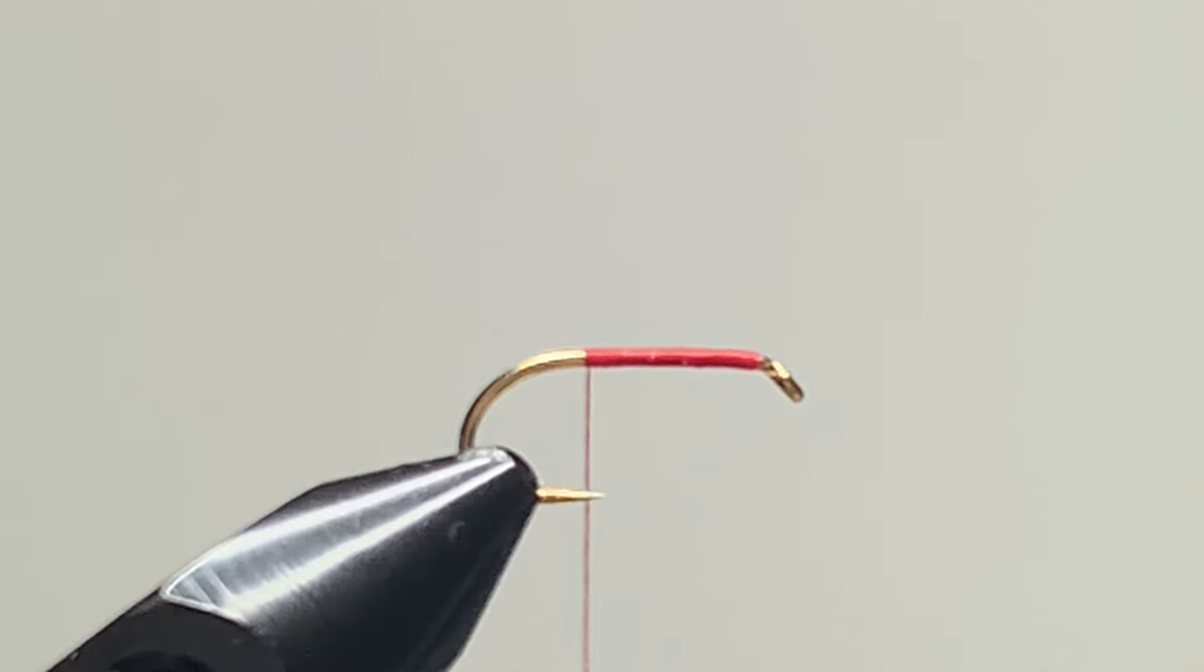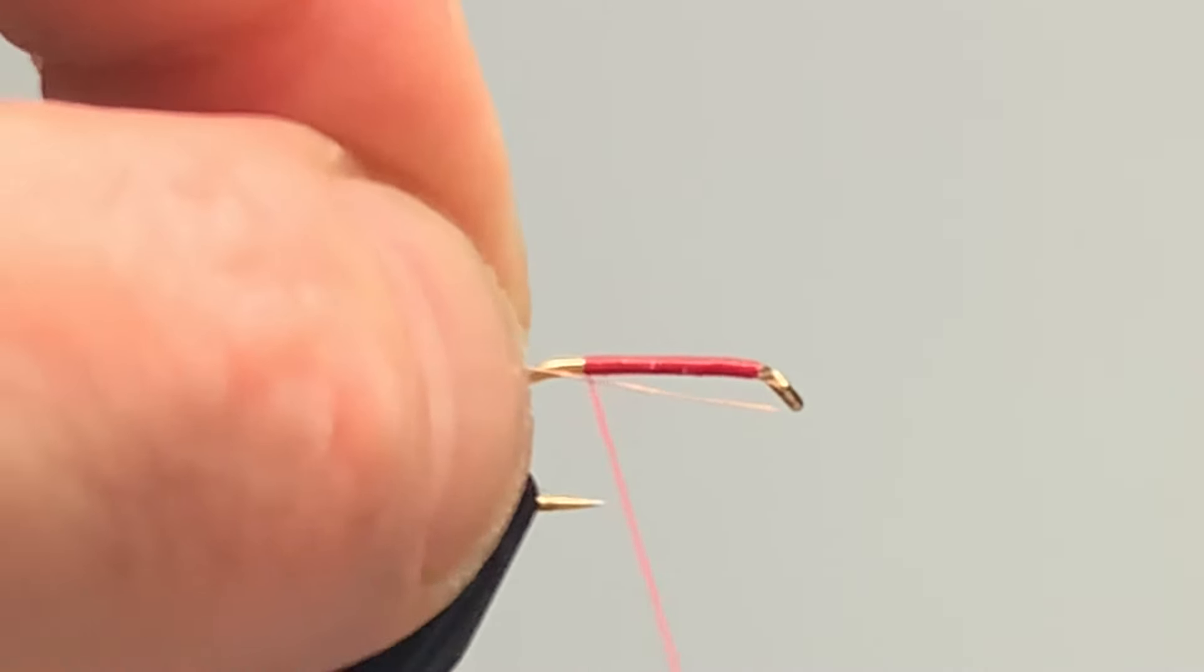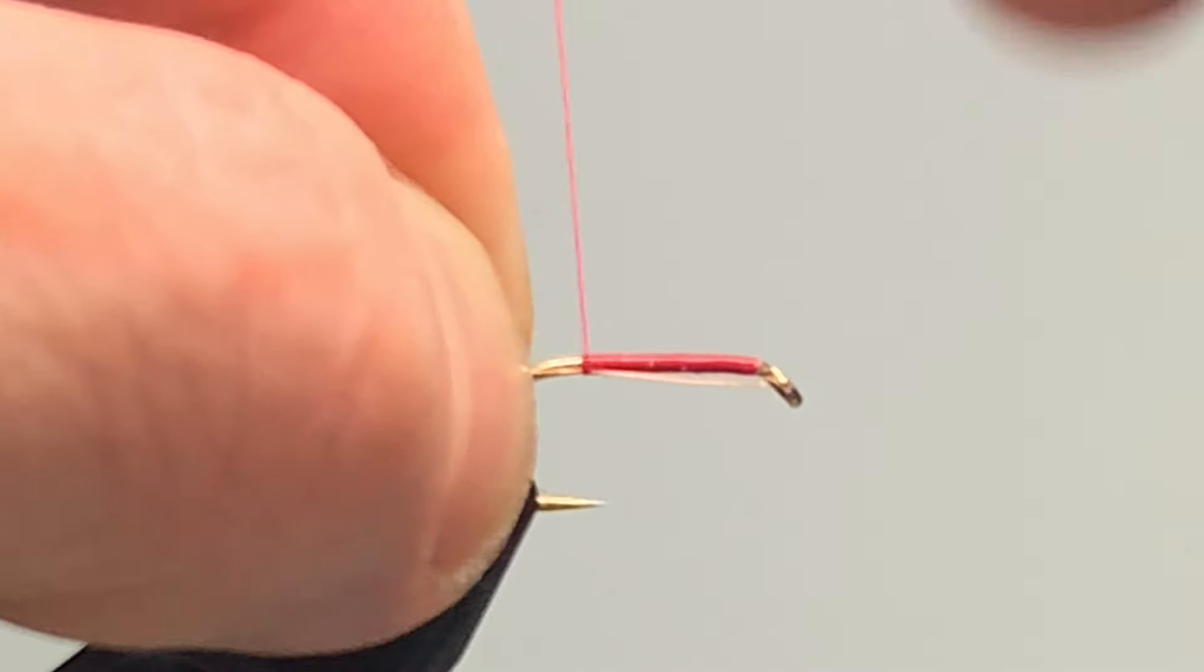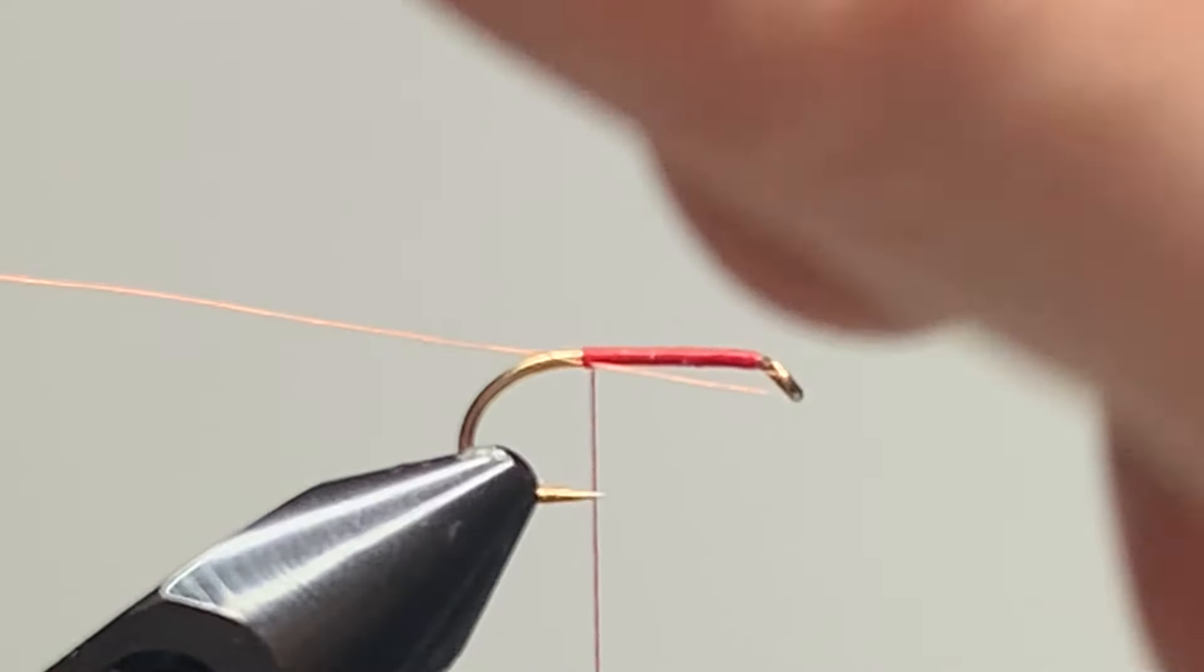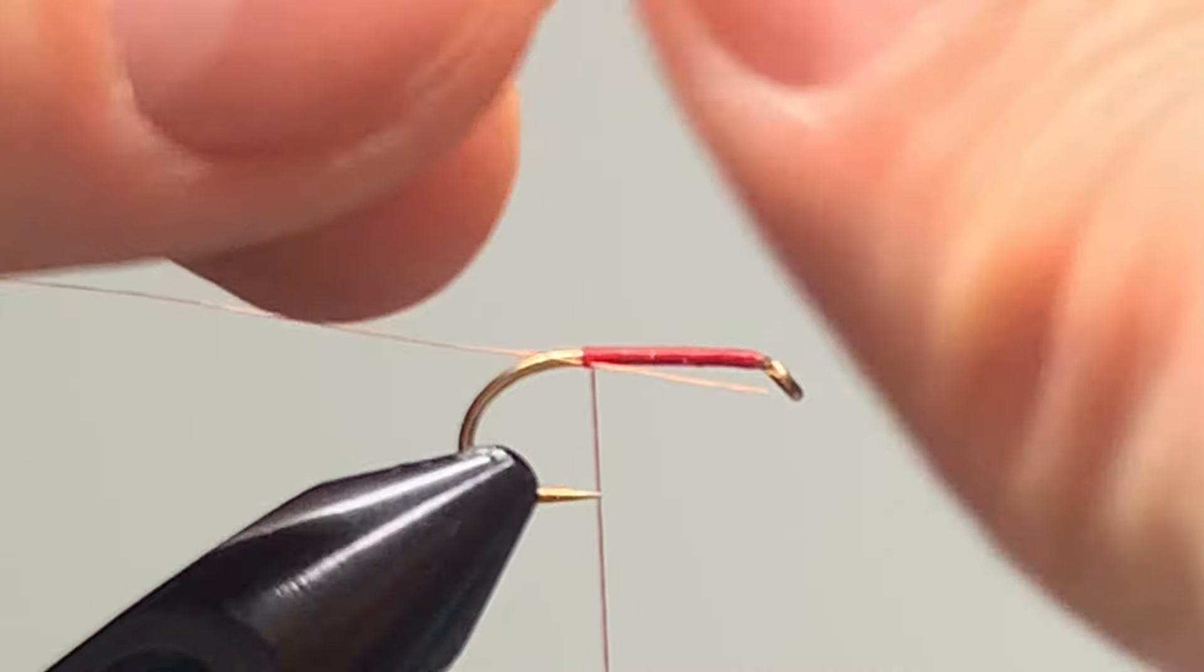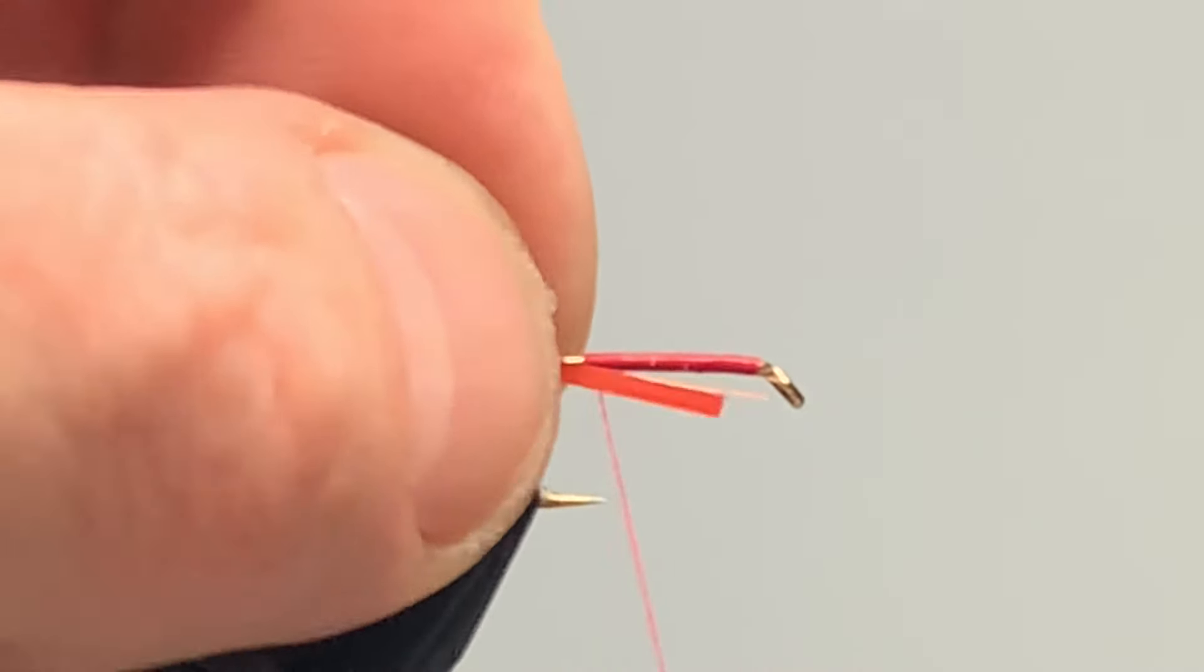The rib I'm going to use today is a fine copper wire, and the body is going to be an orange tinsel, orange in color.